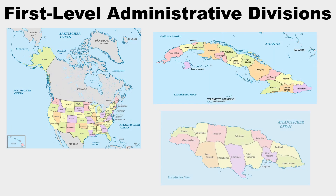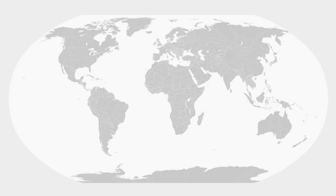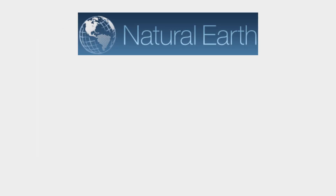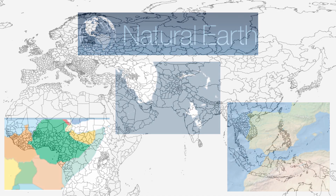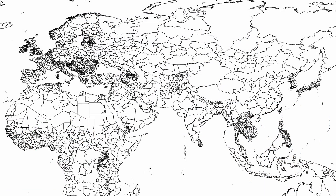First-level administrative divisions are how countries divide themselves up. The U.S., for example, is divided mostly into states, Cuba into provinces, and Jamaica into parishes. To make this app I first need to gather the proper map data. There are several options, like a map from Wikipedia, but the data I decided to go with came from Natural Earth, who have created wonderful vector maps of all kinds — including cultural, physical, raster, and others — including, for my purposes, first-level administrations.